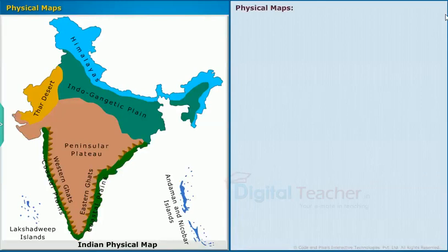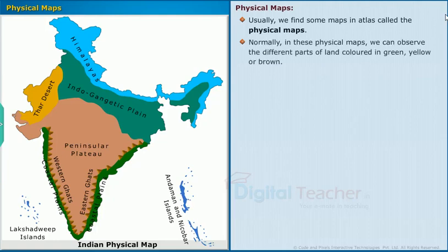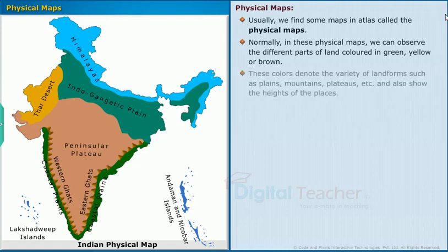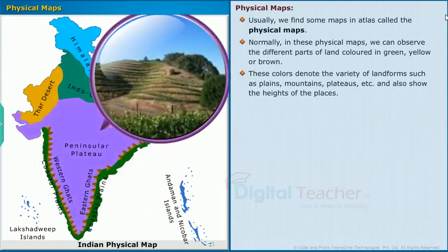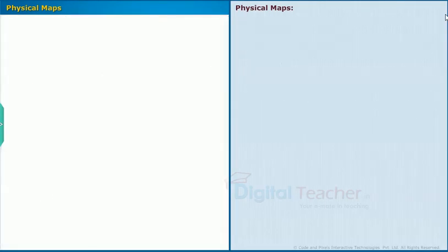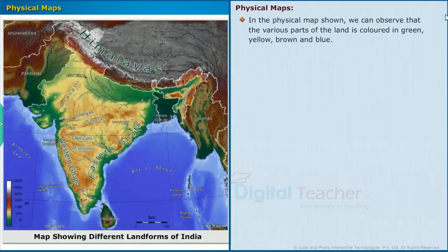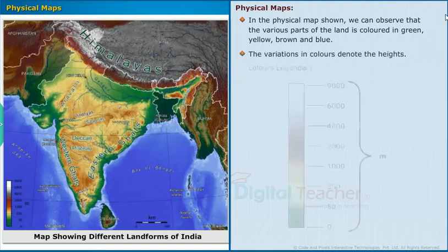Now let us learn about physical maps. In an atlas, physical maps show different parts of land colored in green, yellow, or brown. These colors denote a variety of landforms such as plains, mountains, plateaus, and also show the heights of places. In the physical map shown, we can observe that various parts of the land are colored in green, yellow, brown, and blue. The variations in color denote the different heights of the land.